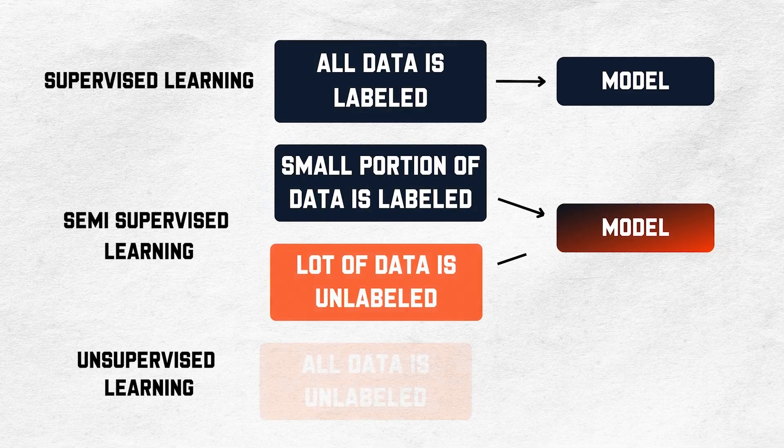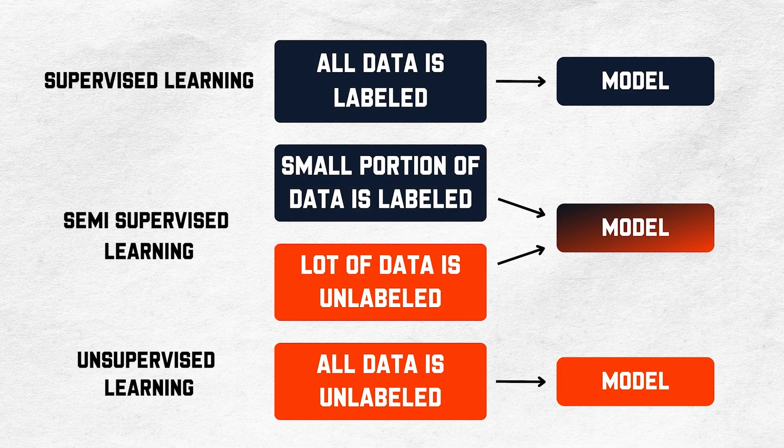Generative AI is a type of deep learning that uses artificial neural networks and can process both labeled and unlabeled data to generate new content. It's similar to how humans learn — you go to school where you learn from labeled data, then you go out into the real world and learn from unlabeled data, and in the end you come here and generate content.